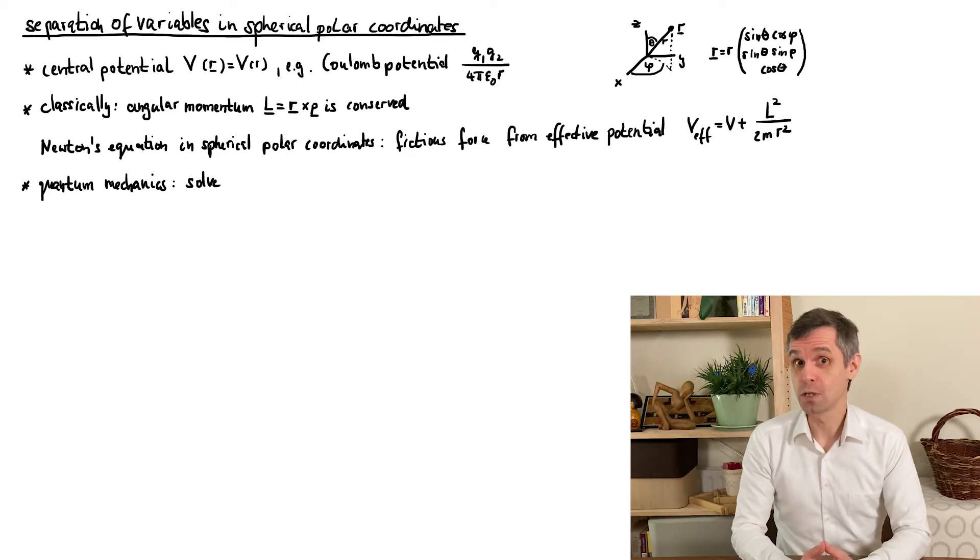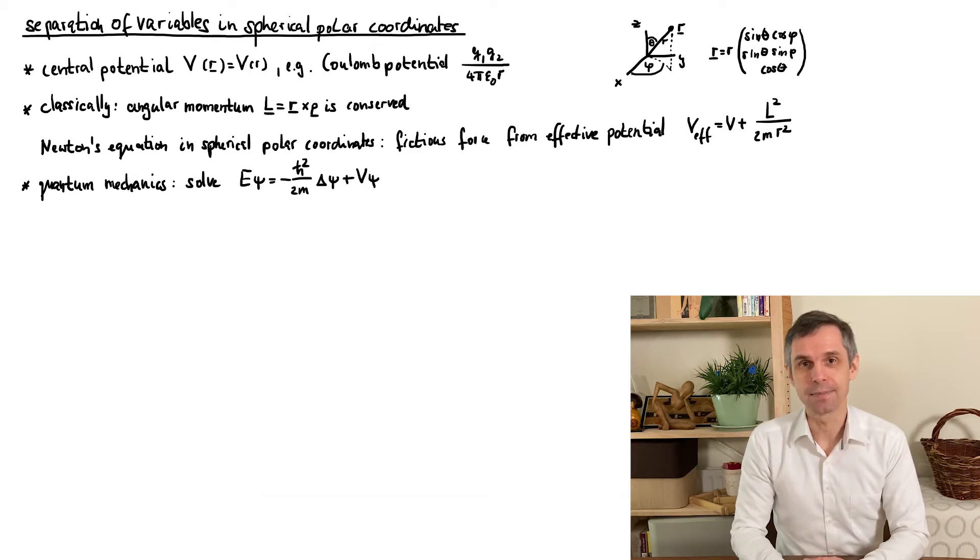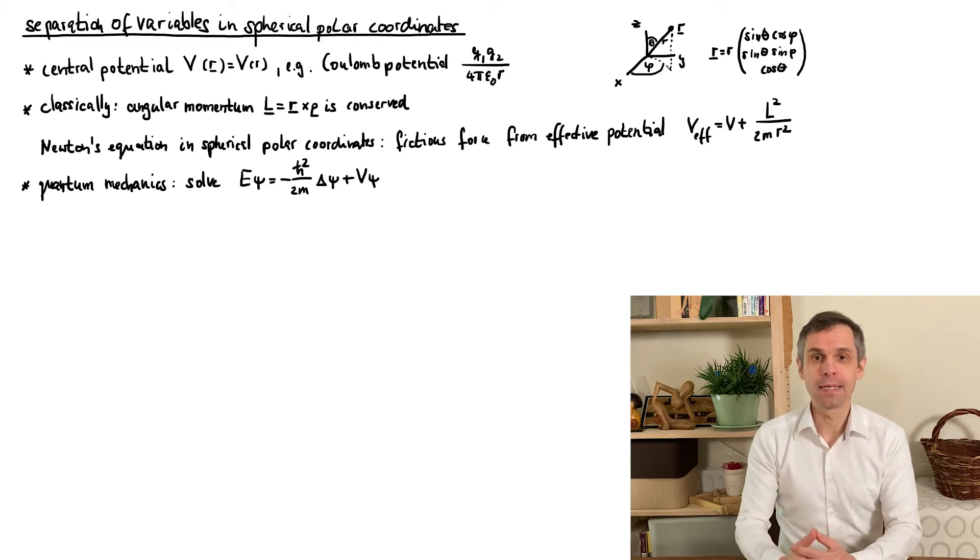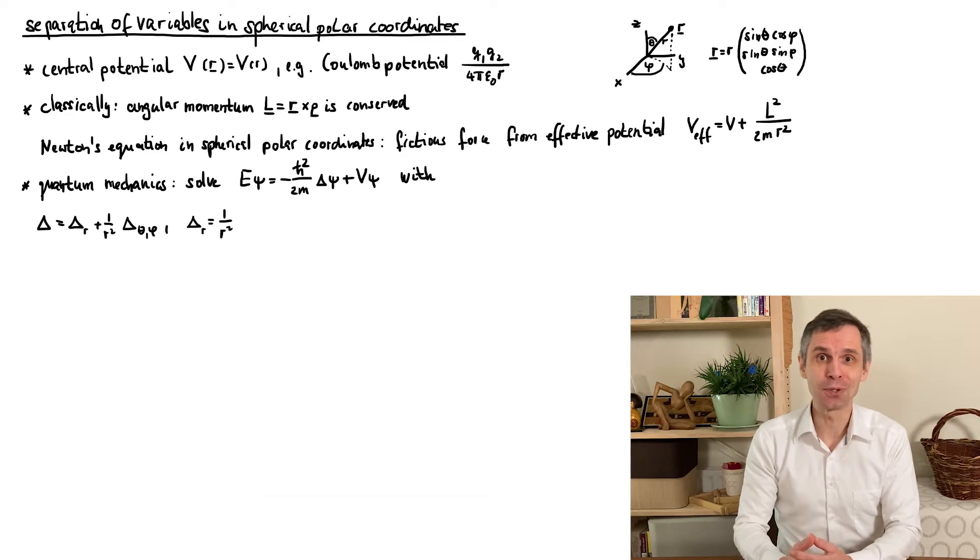Our goal is to solve the stationary Schrödinger equation, where V is now a central potential, so only depends on the radial distance. So the only place where direction enters is in the Laplace operator. And our concrete and explicit approach starts by using its form in spherical polar coordinates.